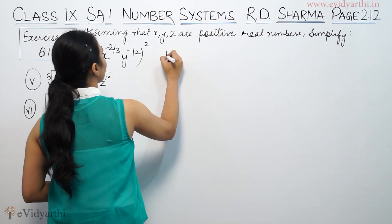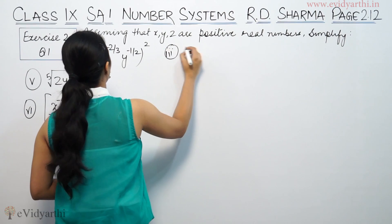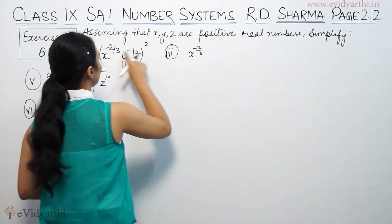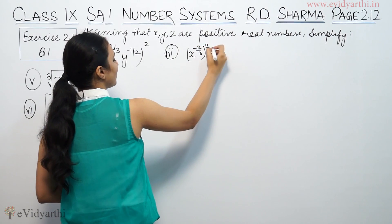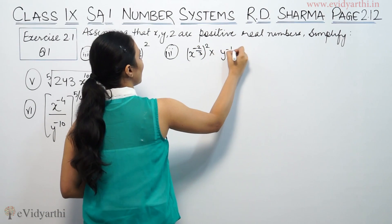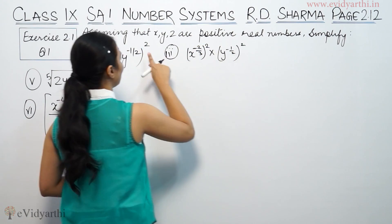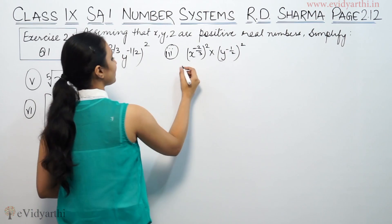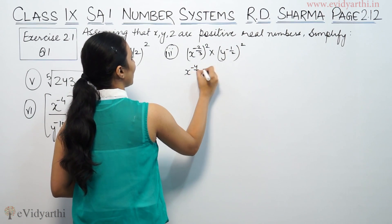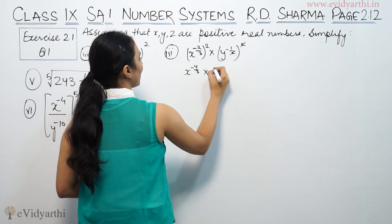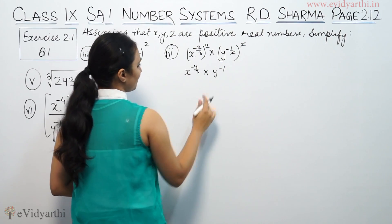Part (i): X raised to the power minus 2/3, this raised to 2, into Y raised to the power minus 1/2, this raised to 2. The other one is multiply. So this is X raised to the power minus 4/3, 2 and 2 cancel, Y raised to the power minus 1.